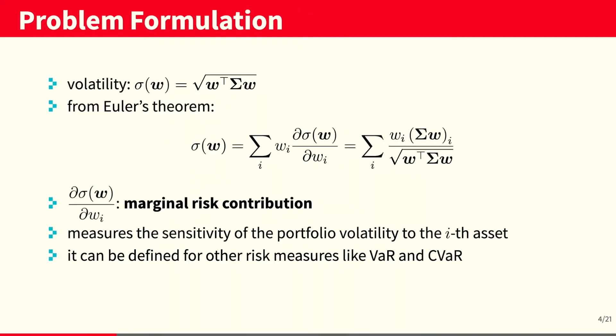Now, the problem formulation of a risk parity portfolio begins with the decomposition of a measure of risk, in which, in this case, we are going to be using the volatility as the measure of risk. We can decompose the volatility following Euler's theorem, where the derivative of the volatility with respect to the ith portfolio weight is called the marginal risk contribution.